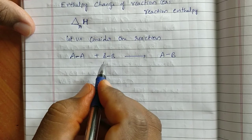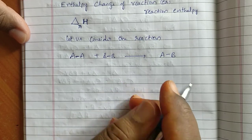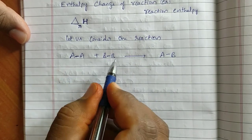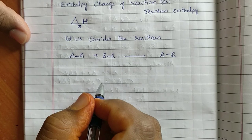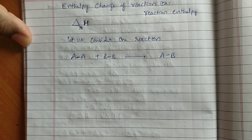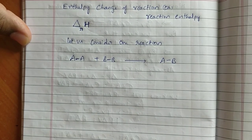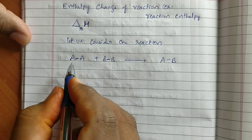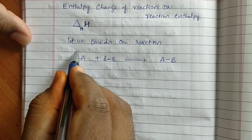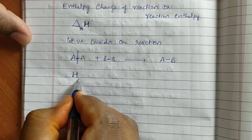For A2 molecules and B2 molecules to undergo any reaction, old bonds must be broken and new bonds must be formed. Only then will the reaction occur; otherwise, the reaction cannot happen. If old bonds are not broken easily, the reaction cannot happen easily. The amount of energy required to break the bond between A and A is called the bond energy of A2.